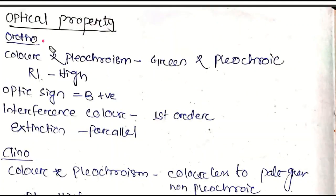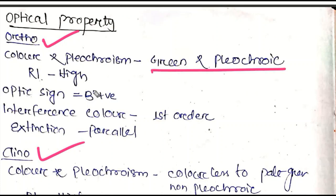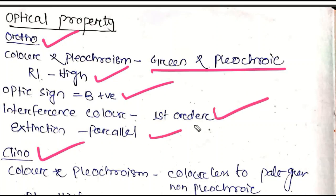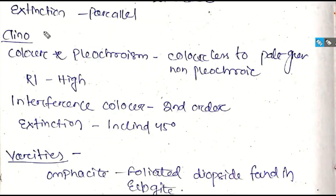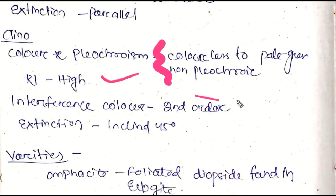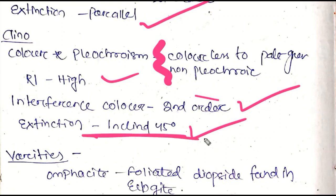Optical properties: orthorhombic members crystallize in the orthorhombic system. They show pleochroism in green color (hypersthene). Refractive index is high. Optic sign is biaxial positive. Interference color is first-order. Extinction is parallel. Clinopyroxene members are monoclinic and triclinic systems, show no pleochroism, have a high refractive index, second-order interference colors, and inclined extinction.